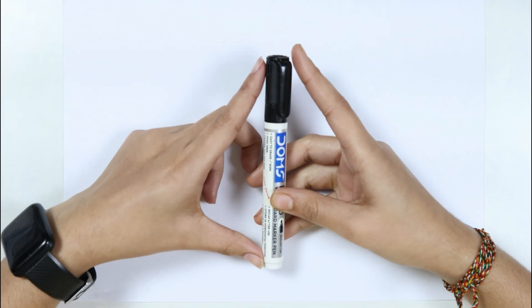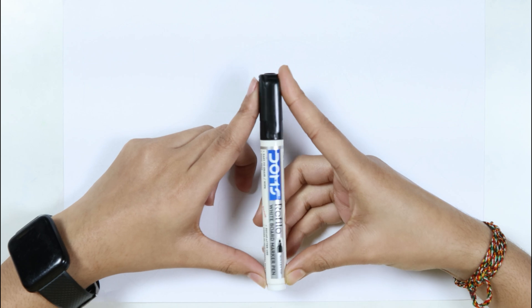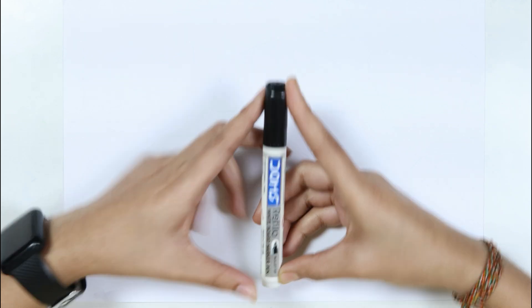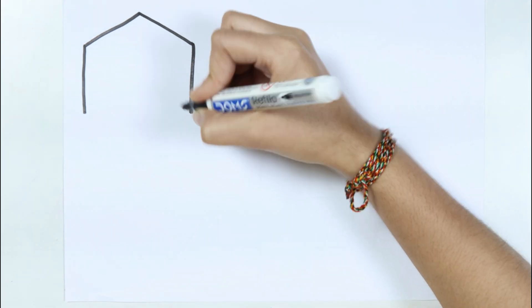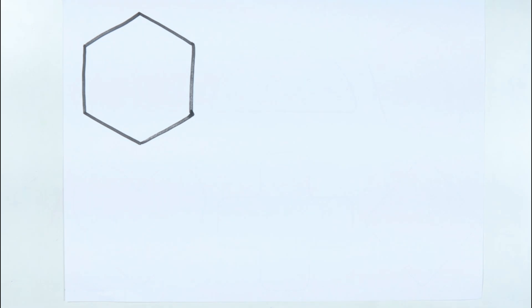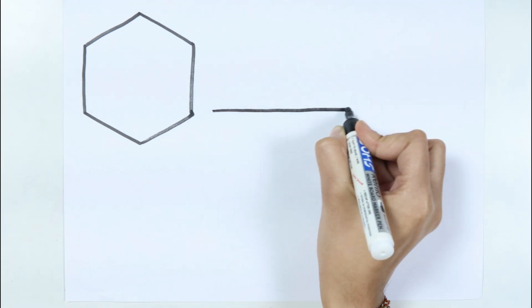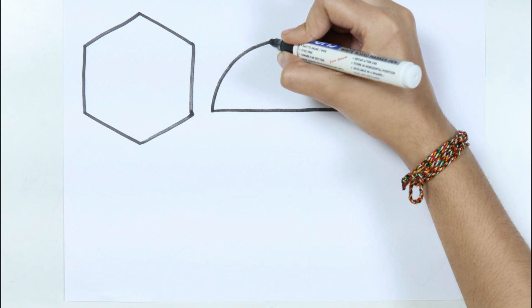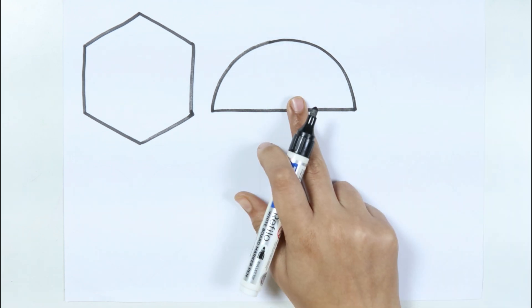This is the black color. Which color kids? This is the black color. Hexagon. Semi-circle.